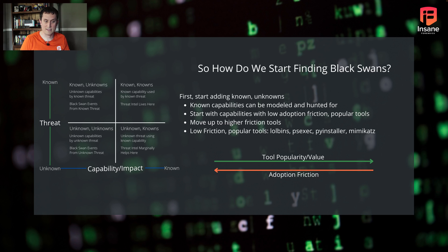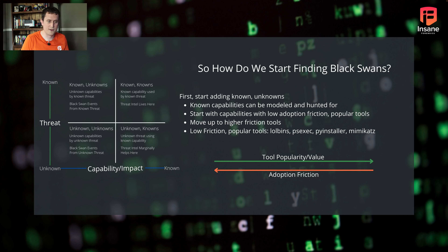Once you start with low adoption friction popular tools, move up to the harder ones people think attackers won't use. Start with easy wins and low-hanging fruit. Examples include living-off-the-land binaries, PsExec, PyInstaller — we've seen PyInstaller used in major nation-state campaigns, including APT29 and a few other major APT groups — and Mimikatz, which you might find your red team using but APTs are doing too. First thing you can do is start adding the known unknowns.